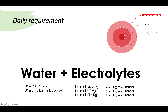For electrolytes, you need 1 millimole of sodium per kg per day, 1 millimole of potassium per kg per day, and 1 millimole of chloride per kg per day. For a 70kg patient, that's 1 times 70, so you need approximately 70 millimoles per day of each — that's all you need as a daily requirement.